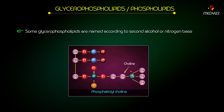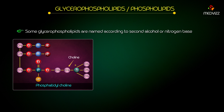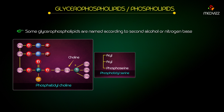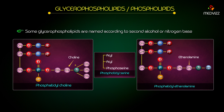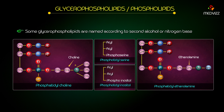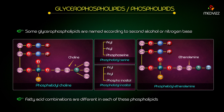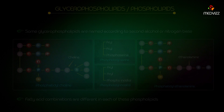Some glycerophospholipids are named according to the second alcohol or nitrogen base and are considered as derivatives of phosphatidic acid. They are phosphatidylcholine, phosphatidylserine, phosphatidylethanolamine, and phosphatidylinositol. The fatty acid combinations are different in each of these phospholipids.